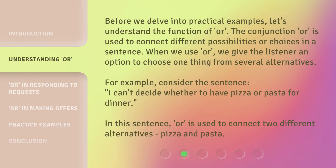Before we delve into practical examples, let's understand the function of 'or'. The conjunction 'or' is used to connect different possibilities or choices in a sentence. When we use 'or', we give the listener an option to choose one thing from several alternatives.